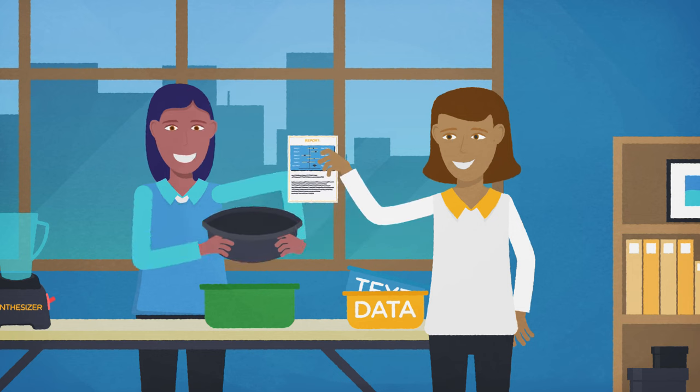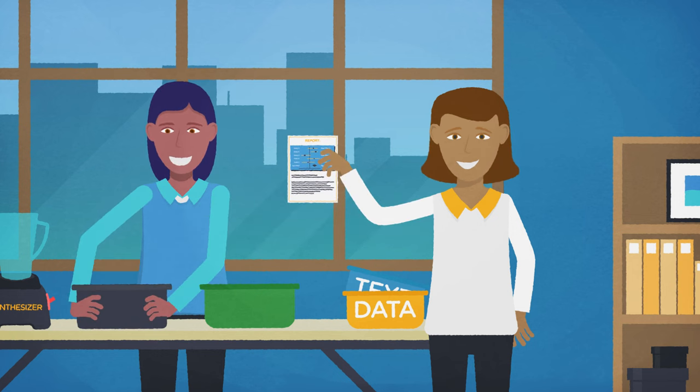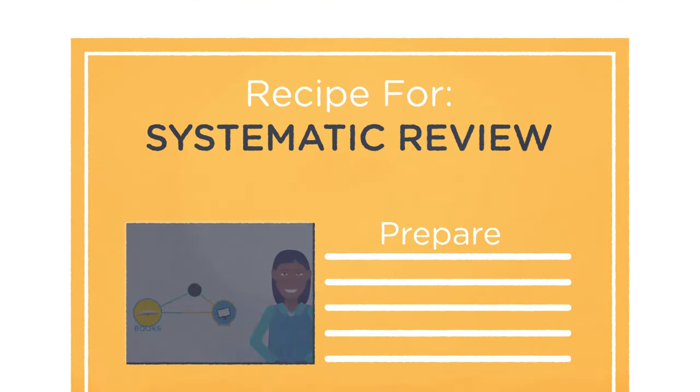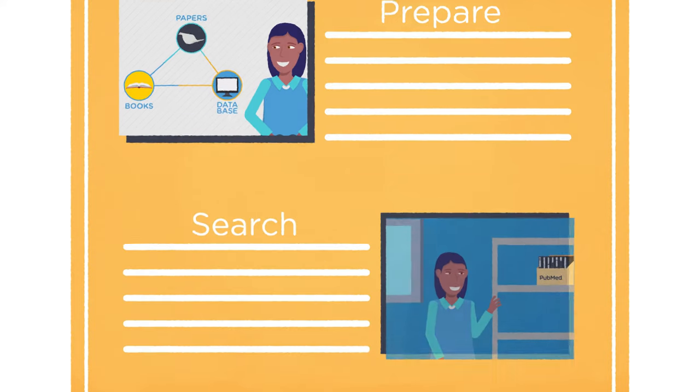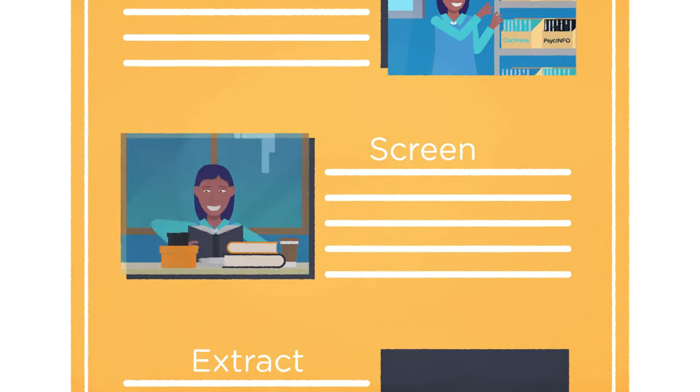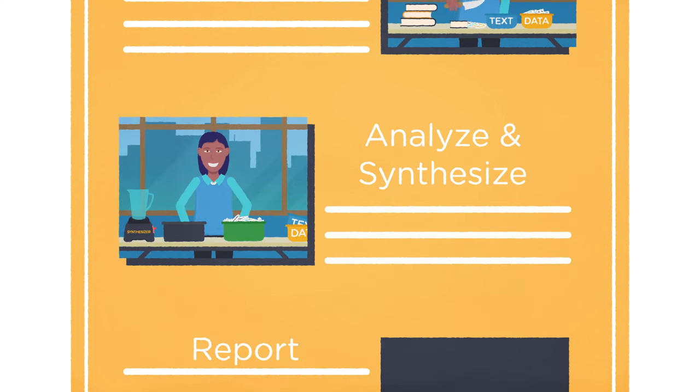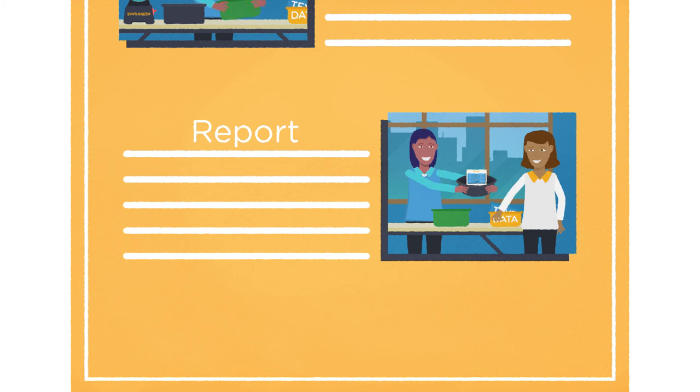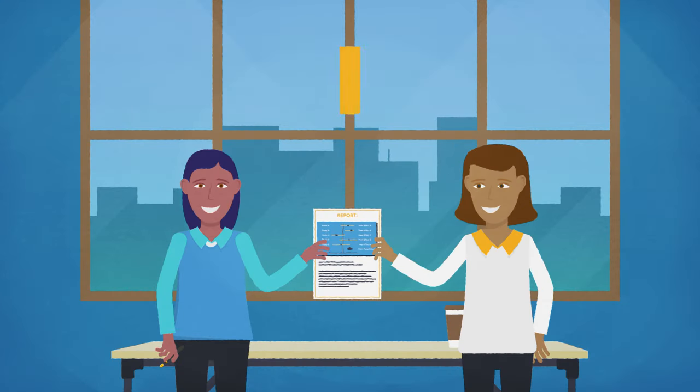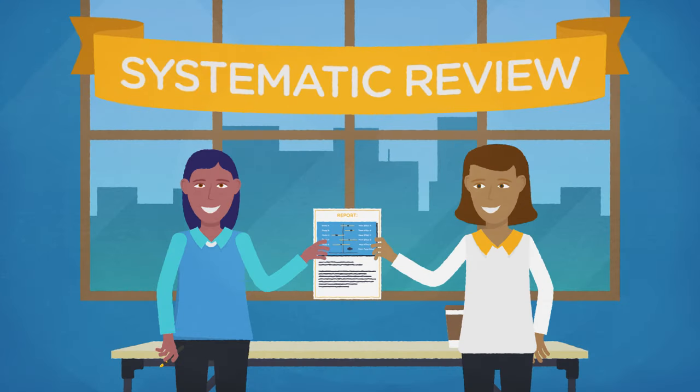Want to answer more questions with a systematic review? Don't forget the steps. Prepare your topic. Search for studies. Screen studies. Extract data. Analyze and synthesize evidence. And report your findings. There you have it, the steps of a systematic review. Enjoy!